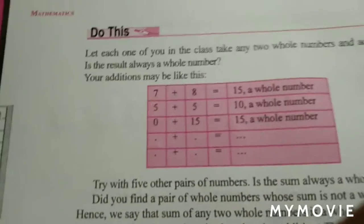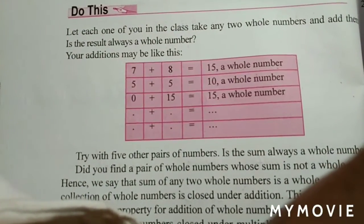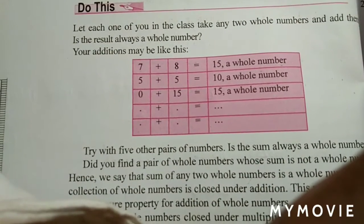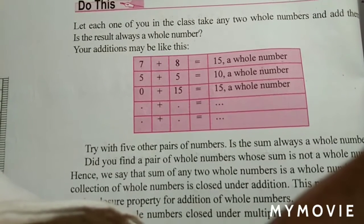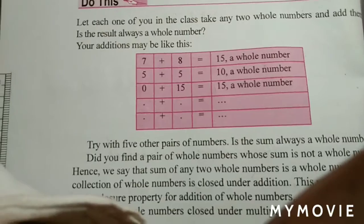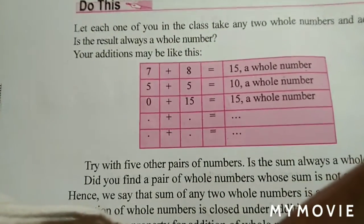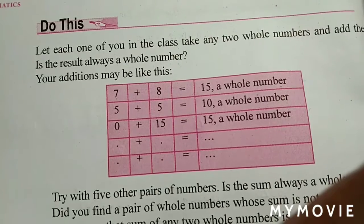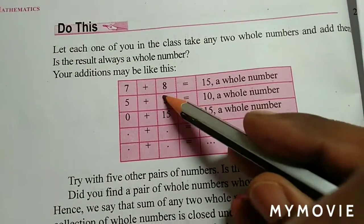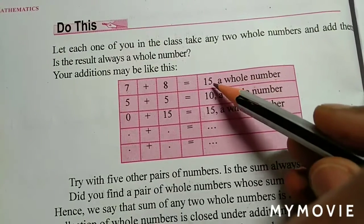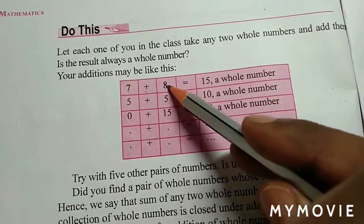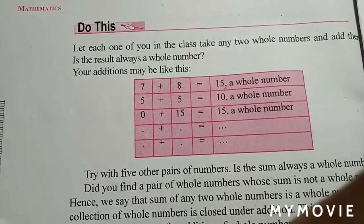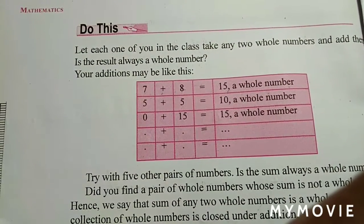First we will see the closure property of whole numbers — whether whole numbers satisfy the closure property or not. Whole numbers are closed under addition and also under multiplication. देखो, इसका मतलब है addition में whole number close होता है कैसे — अगर कोई भी दो whole numbers को हम add करेंगे तो एक whole number आएगा। Seven is a whole number और eight भी whole number, इन दोनों को जोड़कर 15 आया, 15 भी whole number है।